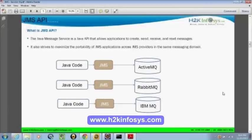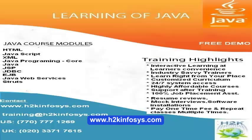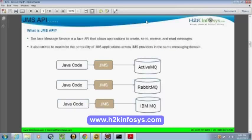JMS is a specification, and we have multiple vendors who actually provide the implementation product. The popular ones in the market are ActiveMQ, IBM MQ, and RabbitMQ. ActiveMQ is free to use — it's open source. IBM MQ is popularly used but we have to pay for it. The Java code we write with this specification is still going to be the same regardless of the underlying implementation vendor. The JMS specification stands for portability across multiple JMS providers.